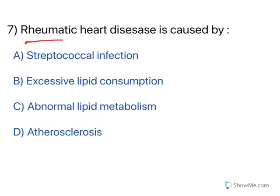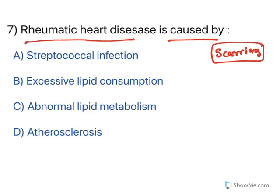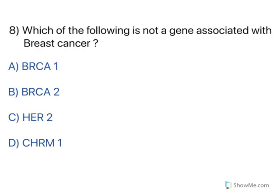Rheumatic heart disease occurs when heart valve inflammation causes scarring of the valves, which can lead to death. It is caused by untreated streptococcal infection — in certain people, untreated streptococcal infection progresses to rheumatic heart disease. Option A is the right answer.